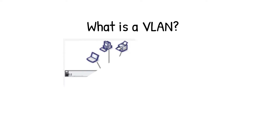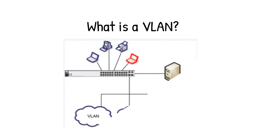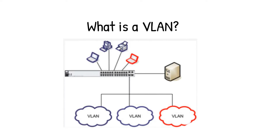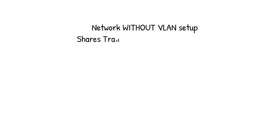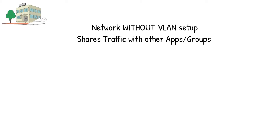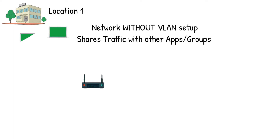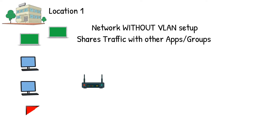What is a VLAN? VLAN stands for Virtual Local Area Network. VLANs can keep network applications separate despite being connected to the same physical network, and without requiring multiple sets of cabling and networking devices to be deployed.